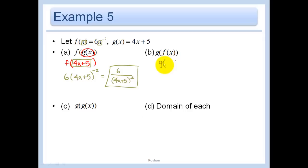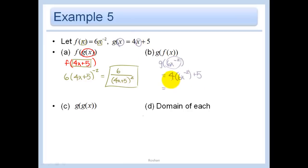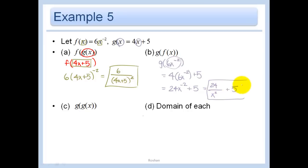Now doing g of f of x. f of x is 6x to the negative 2, and I replace x in g with this. g of x is 4x plus 5, so I get 4 times 6x to the negative 2 plus 5. Since it's multiplication, 4 times 6 is 24x to the negative 2. The 24 has no negative exponent so it stays up, and only the x to the negative 2 moves down: 24 divided by x squared plus 5.